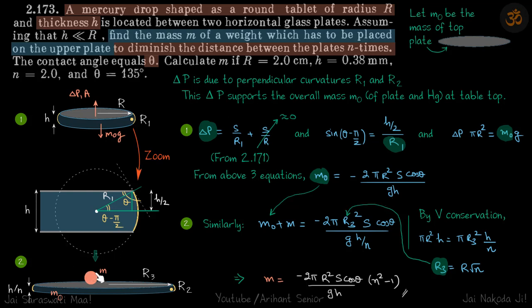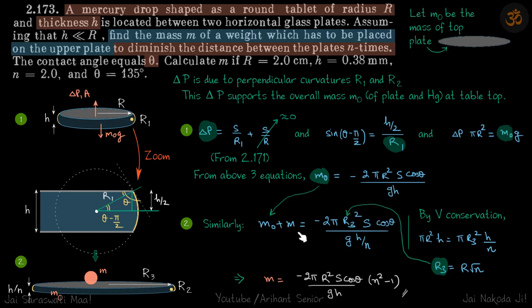Now we place mass m on top, and as a result the thickness becomes h/n. The same equations still apply, but r1 is replaced by r2, r is replaced by r3, m0 is replaced by m0 + m, and h/2 is replaced by h/(2n), i.e., h is replaced by h/n.